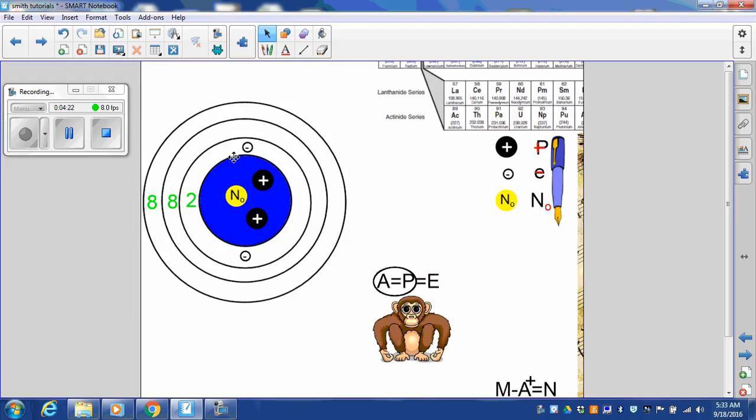Now this model is a little different. The rings are the spaces. So instead of them being hooked exactly to a ring, I put them on the space. Because different models represent in different ways. So I want you to see a variety. So since helium has two electrons on this ring, it's full.